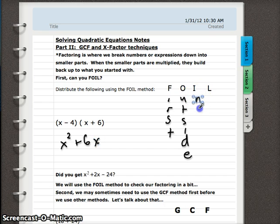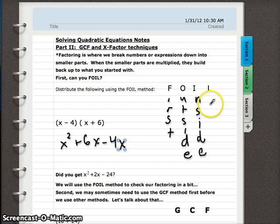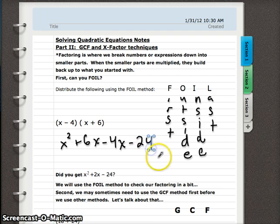Then we do the I part, which stands for inside. So the inside terms or inside part of our binomials here. Negative 4 times x is negative 4x. And then we do the L part, which is the last terms. So the last term in each parenthesis. Negative 4 times 6 is negative 24. Last step is always to combine any like terms. So we have 6x minus 4x. That gives us a positive 2x.